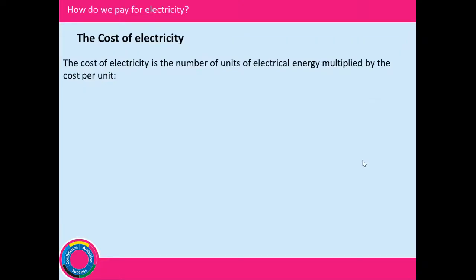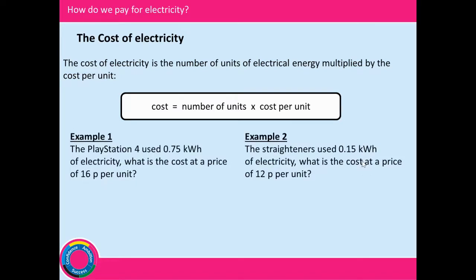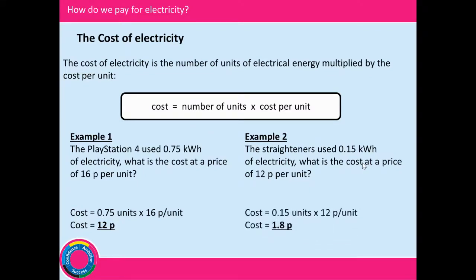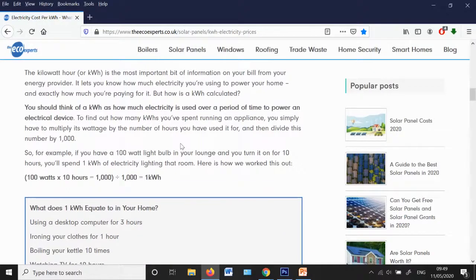The actual cost of electricity is the number of units of electrical energy multiplied by the cost per unit. So cost equals number of units times cost per unit. For our PlayStation: 0.75 kWh at 16 pence per unit comes out at 12 pence. For the hair straighteners: 0.15 kWh at 12 pence per unit is 1.8 pence. I've used 16p and 12p per unit as examples — let's go back to the website to find out the actual current cost.